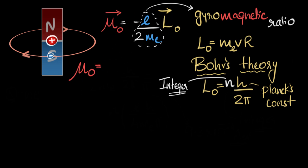So that's going to be e divided by 2mₑ, that's the gyromagnetic ratio, times the angular momentum. We'll use the quantization condition, nh over 2π.